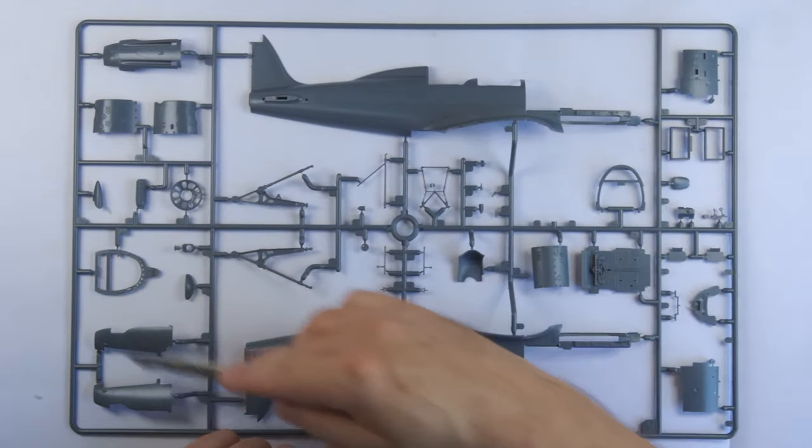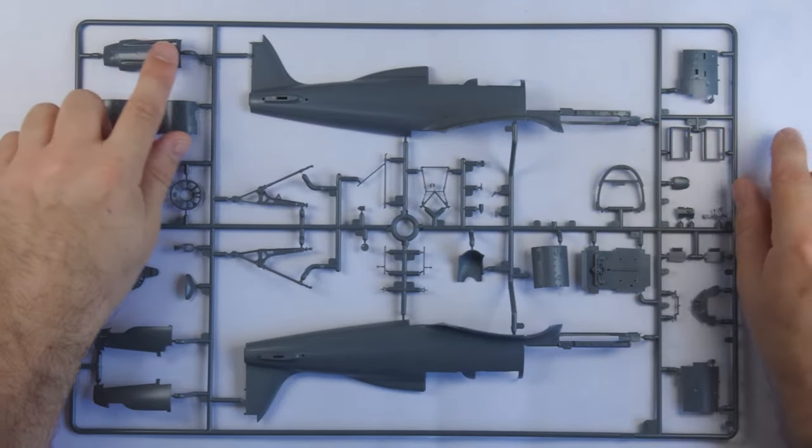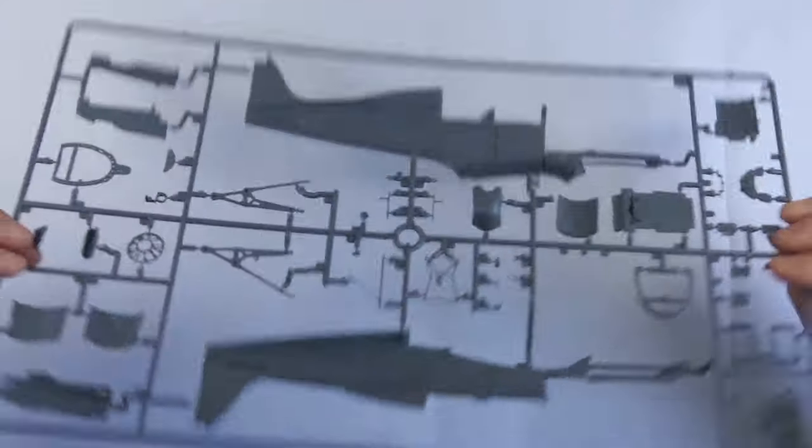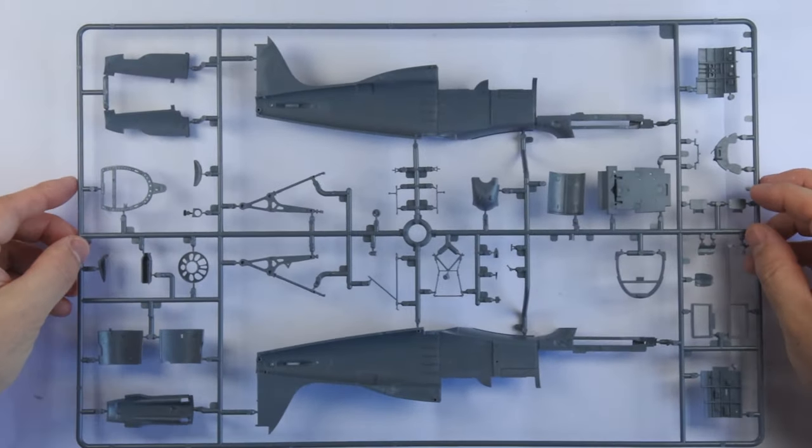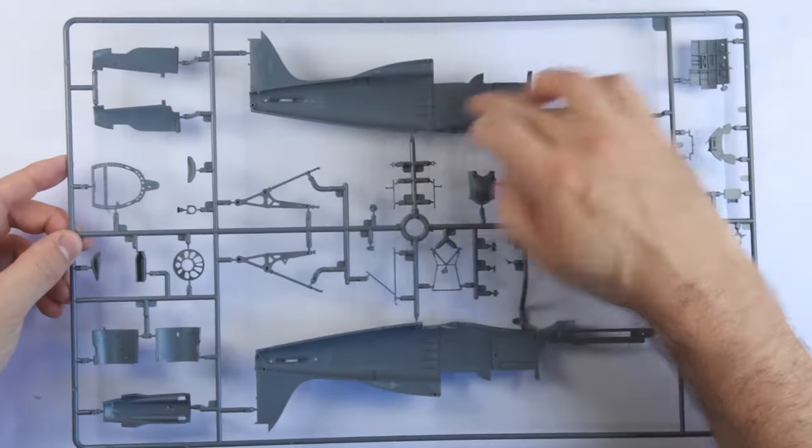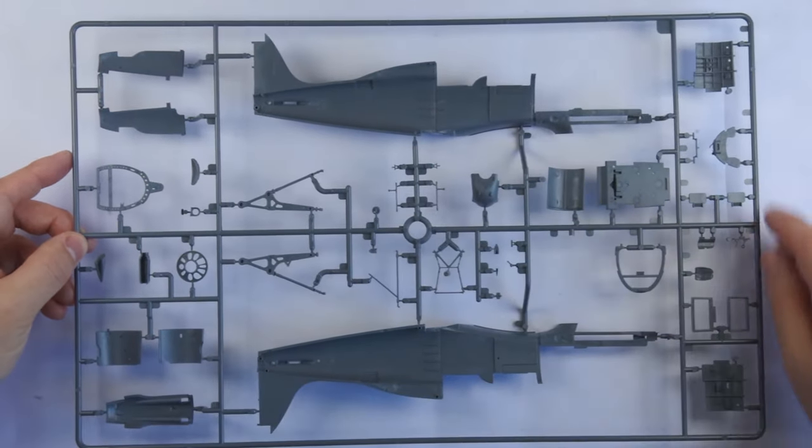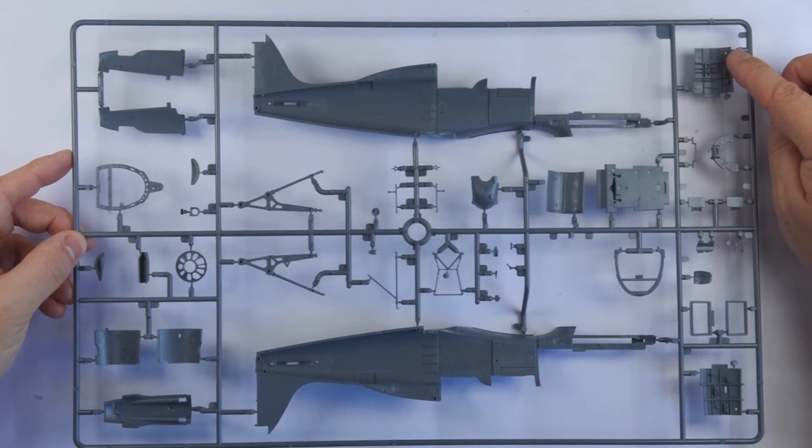There are some complex shapes here too, such as the upper engine cowling. On flipping the frame over, we can see the areas in the main fuselage that the cockpit inserts go into. Further examination of the frame shows these inserts with their molded detail.